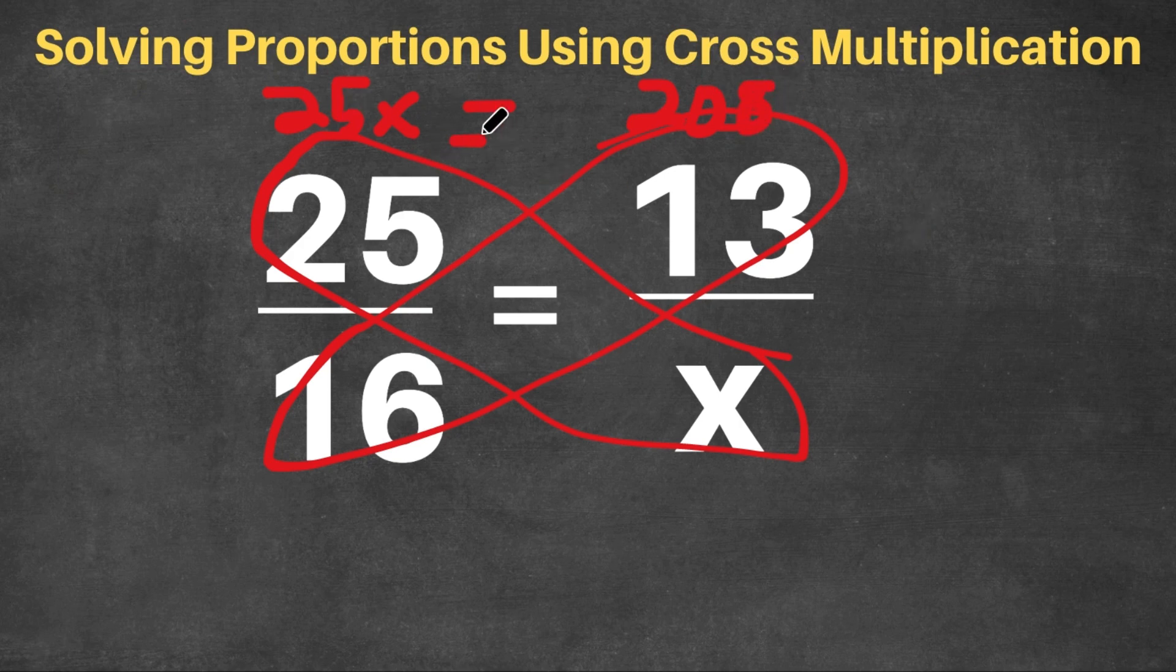And now we have to divide by 25 on both sides. So we get x equals 208 divided by 25. That's going to get you to a decimal. The answer for that is 0.32. So that's our value for x. And that's the basics of cross multiplication.